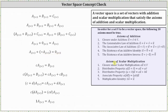Moving on to the axioms of scalar multiplication: if c is a scalar, c times matrix A equals another two by three matrix B, where the elements are found by multiplying c by every element in matrix A — we have closure under scalar multiplication. The distributive properties hold: c times the sum of matrix A and B equals c times A plus c times B, and the quantity c plus d times matrix A equals c times matrix A plus d times matrix A. The associative property of multiplication also holds, and one times matrix A equals matrix A, verifying the multiplicative identity. The set of two by three matrices is a vector space.